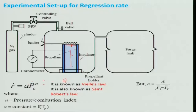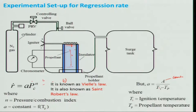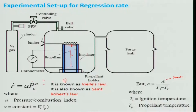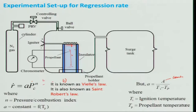In the expression ṙ = a × Pc^n, the constant 'a' depends on propellant temperature as: a = a_ref × exp[something involving T_i (self-ignition temperature of the propellant) and T_p (propellant temperature)]. Since T_p varies with environment, 'a' is not truly constant. The relationship is semi-empirical, so one must be very careful about units — the same units used in obtaining the constants must be used when applying the expression.